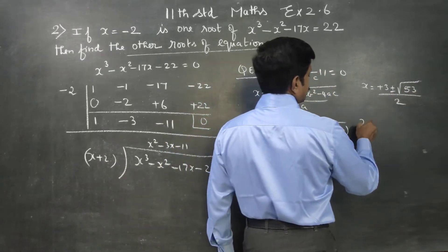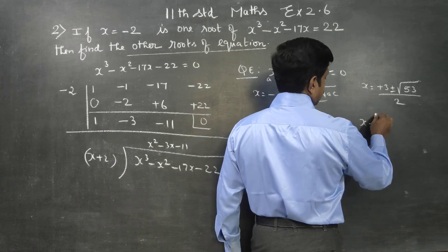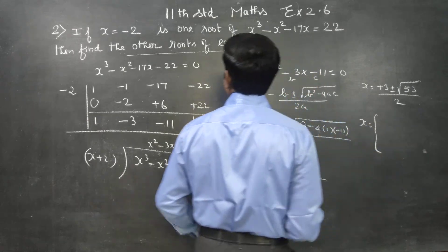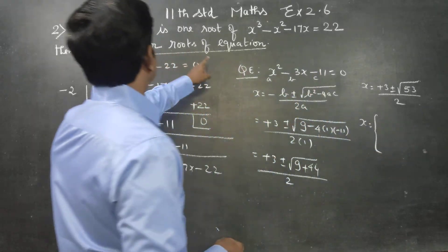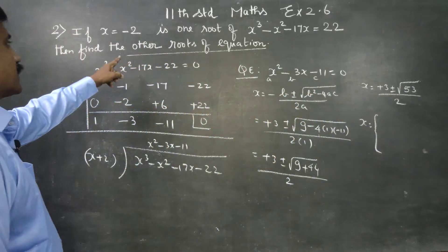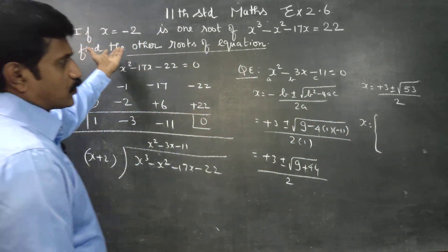Your final answer: the solution is x equals — find the other roots. Already one root is x equals minus 2, and the other roots come from the quadratic.